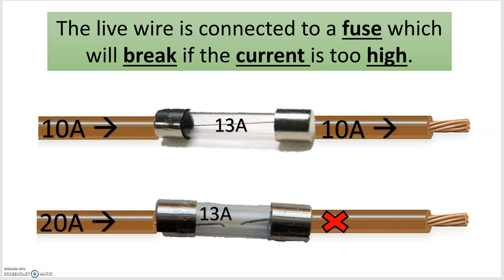In the second example, with 20 amps going through the appliance and a 13 amp fuse, it broke. That means the appliance won't catch fire and the circuit will break.